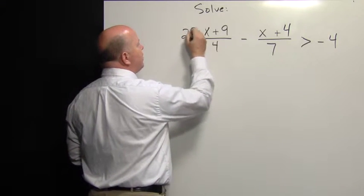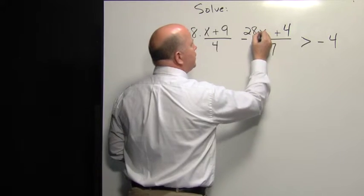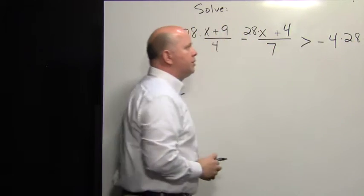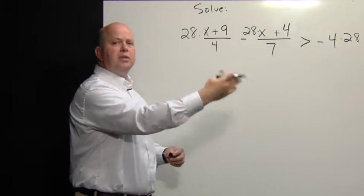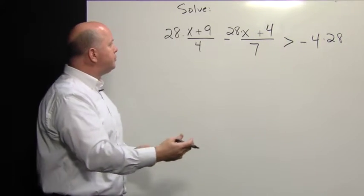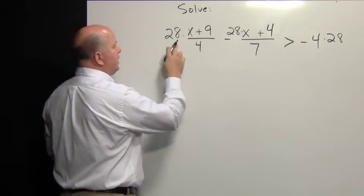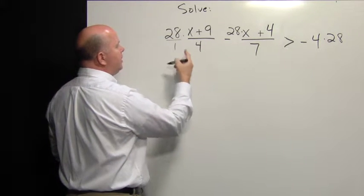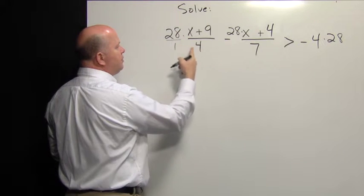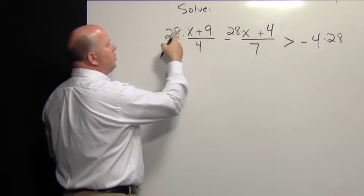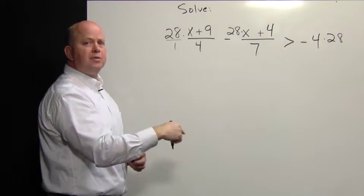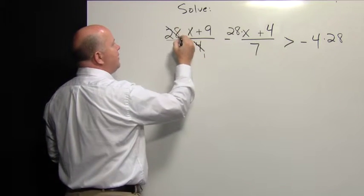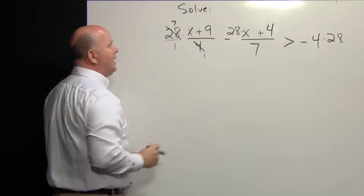If we multiply the entire equation by 28, I highly recommend writing the number 28 times each of the terms, as in the distribution property. This indicates 28 over 1. Because we have this multiplication of a fraction, we can reduce a factor in the numerator with a factor in the denominator — there's a factor of 4 in 4, and a factor of 4 in 28, which leaves us 7.